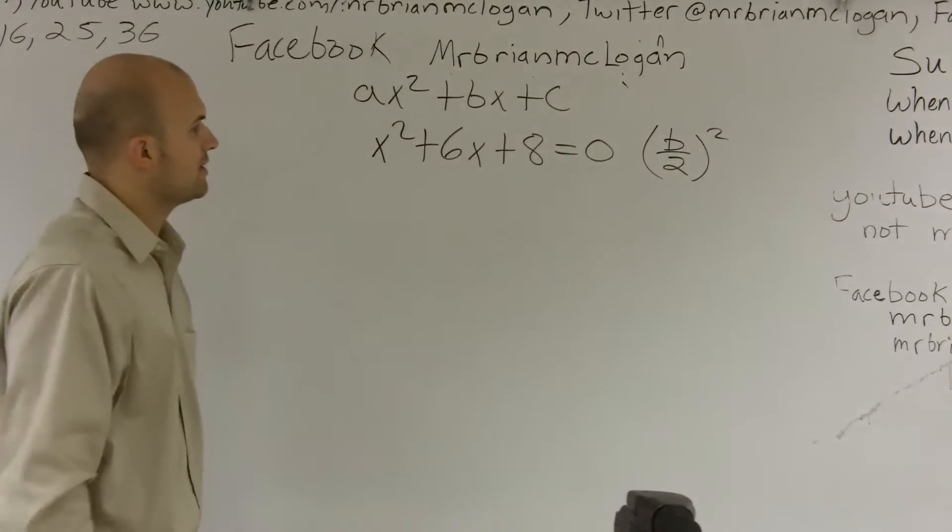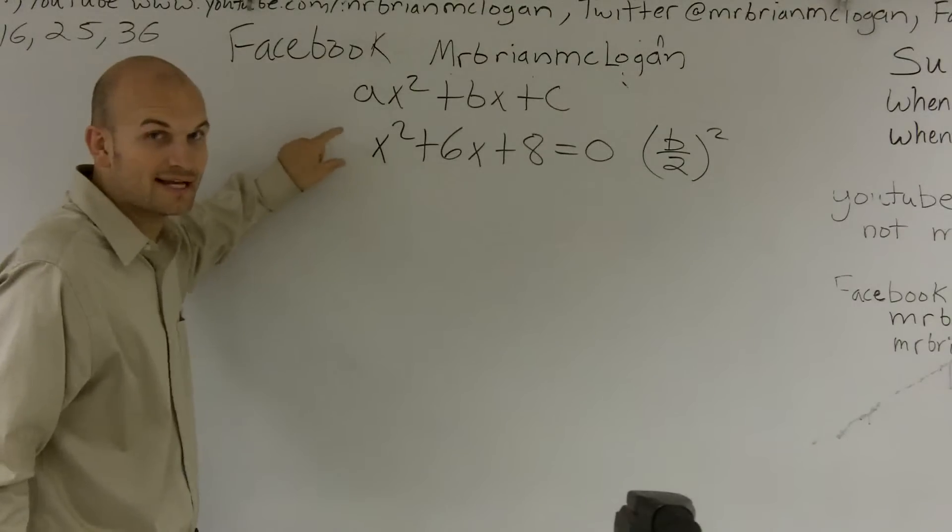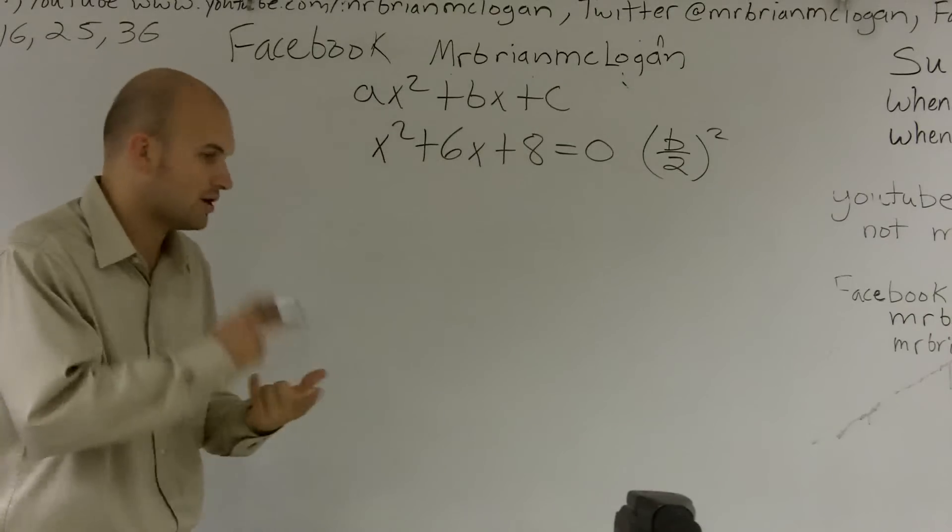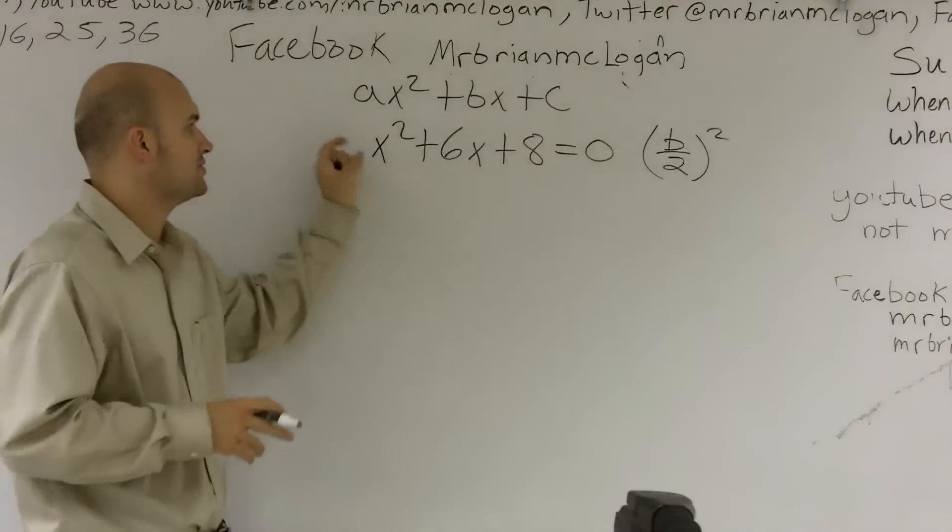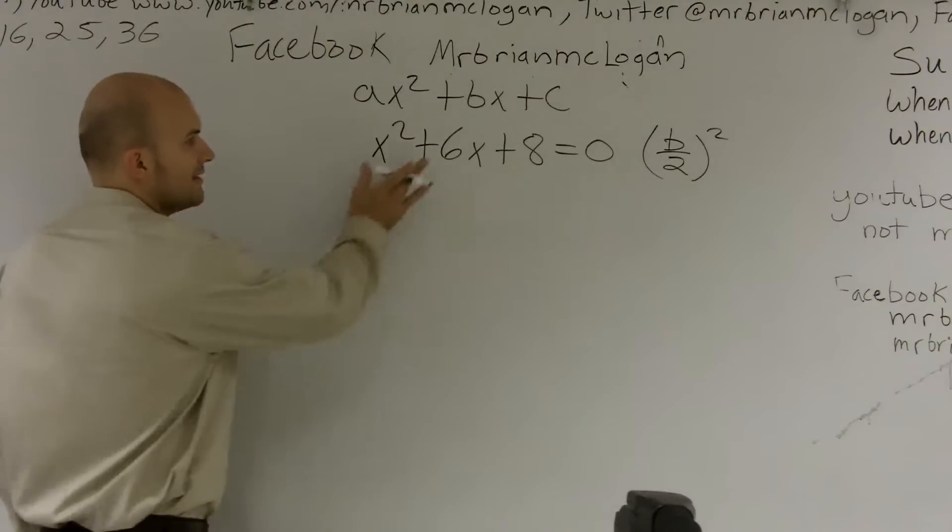So the first thing that we're going to want to do is, you want to make sure that your a, there is nothing in a except for 1. You cannot have a negative 2, a 4, a 4 fifths. You've got to make sure you factor out everything so you only have a 1 as your coefficient. In this problem, I'm good.